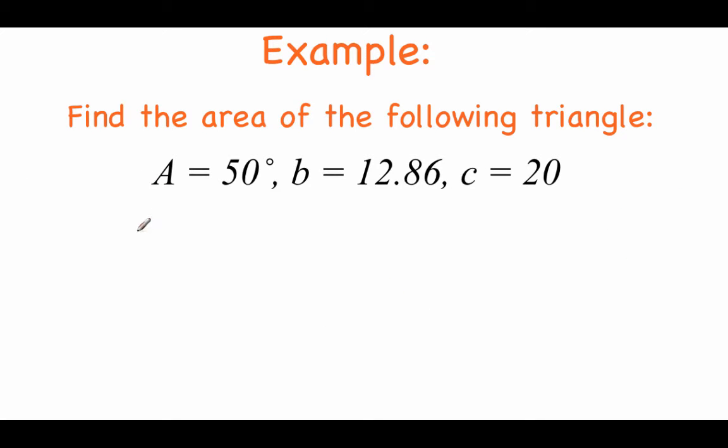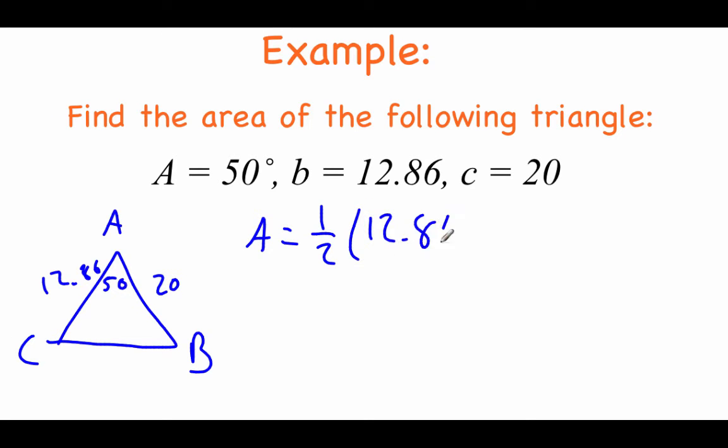Taking a look at this example, we're given a description. We've got angle A as 50 degrees, side B is 12.86, and side C is 20. We don't necessarily need a picture on this one, but we could draw it out if we wanted to. So we've got this picture, here's triangle ABC. A is 50 degrees, side B is 12.86, side C is 20. If we're setting up that area formula, we're going to go one half times the two sides times the sine of the angle between them, which is our 50 degree angle.